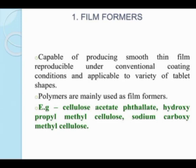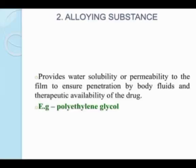The first one is film formers. Film formers are capable of producing smooth thin film, reproducible under conventional coating conditions and applicable to a variety of tablet shapes. Polymers are mainly used as film formers. Examples include cellulose acetate phthalate, hydroxypropyl methyl cellulose, and sodium carboxymethyl cellulose.